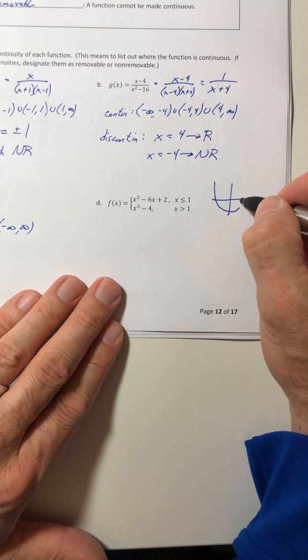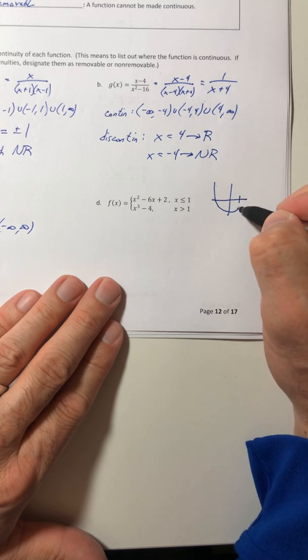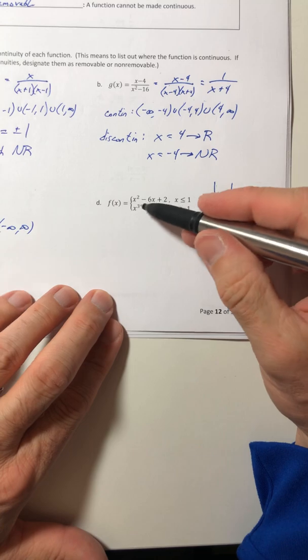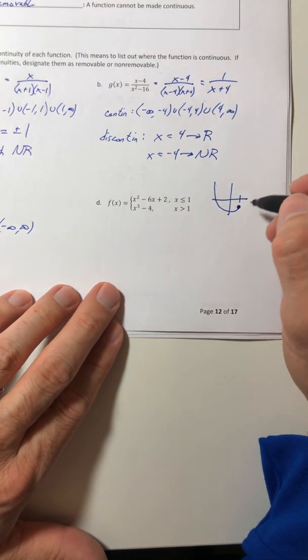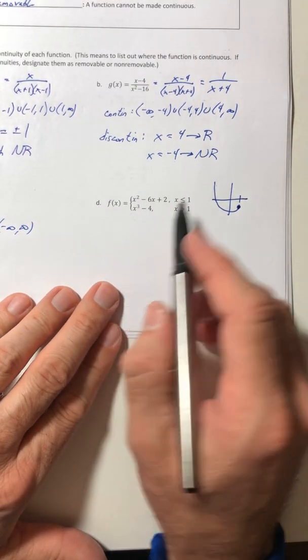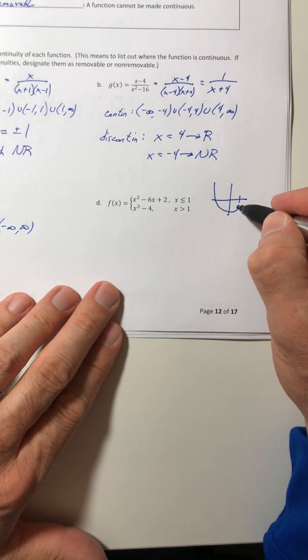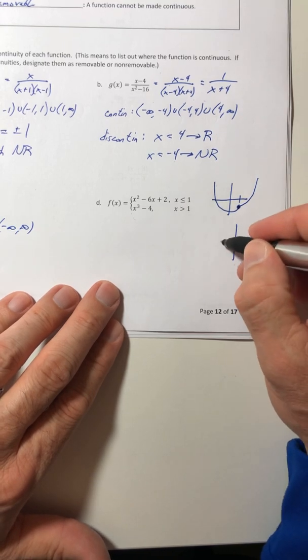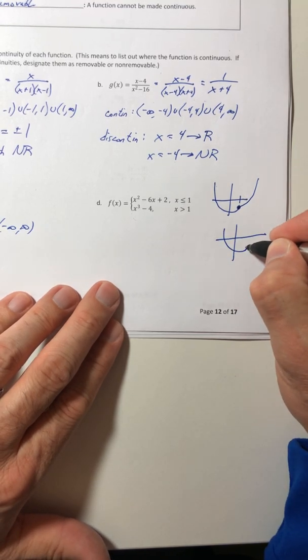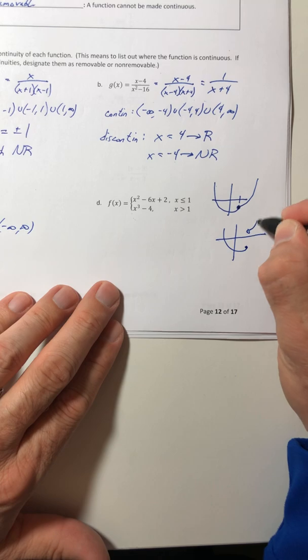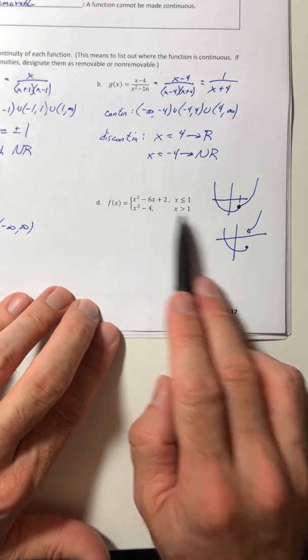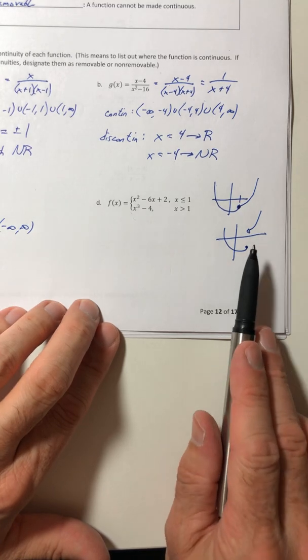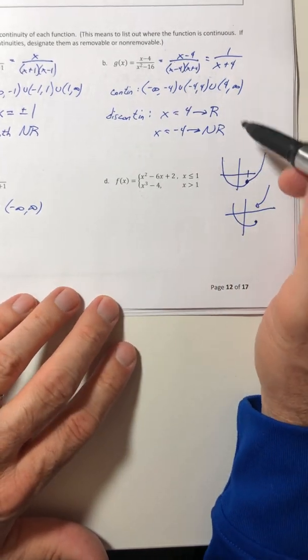So it's going to be continuous if it does something like this. When it gets to the 1 on the parabola, it would have a closed circle. And on the second one, it would be continuous if the second line starts at the exact same place and keeps going or something. And it's not continuous if it does something like that, where the second line would be above or below where the first one stopped.